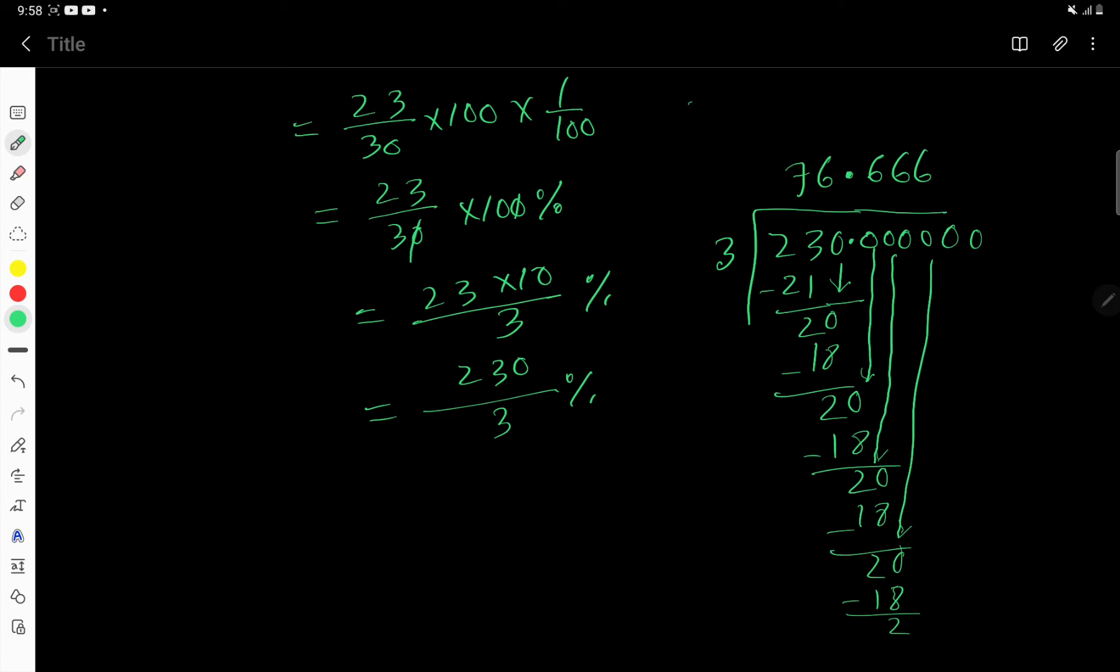So if I round this number to 2 digits after decimal point, 76.7, that is 100 plus 6, 6, 7. So instead of 230 by 3, we can write 76.67. Then we have percentage. So this is the answer. So thank you for watching this video. Be well.